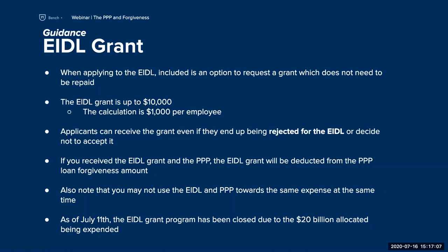The grant itself is now closed, but for those who did receive one: if you received the grant, it's completely forgiven straight off the bat — you don't have to worry about restricted uses, and you can use those funds however you see fit to immediately help your business. One thing to keep in mind is that the grant will affect your PPP loan forgiveness amount if you have one, since they're trying to limit businesses to just one tax-free grant through the pandemic. The grant program allocated a total of $20 billion to businesses.